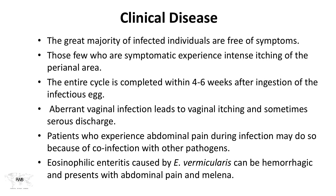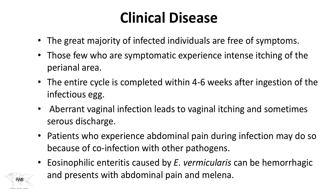The majority of infected individuals are actually free of symptoms. Those who are symptomatic can experience itching, even intense itching, of the perianal area. The entire cycle is completed within four to six weeks after ingestion of the infectious egg. Sometimes aberrant vaginal infection can lead to vaginal itching or even serous discharge. Patients experiencing abdominal pain during infection may have something else going on, though eosinophilic enteritis caused by E. vermicularis has been reported — it can be hemorrhagic and present with abdominal pain.